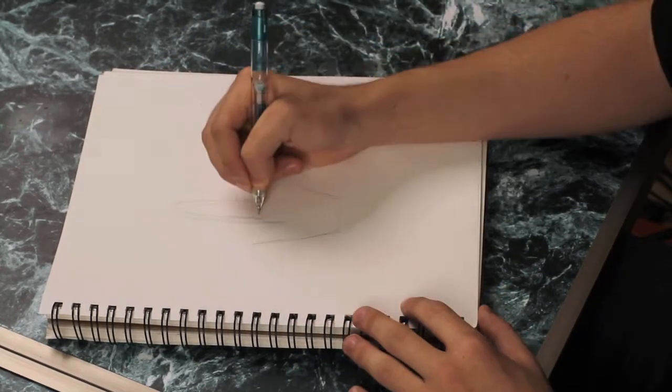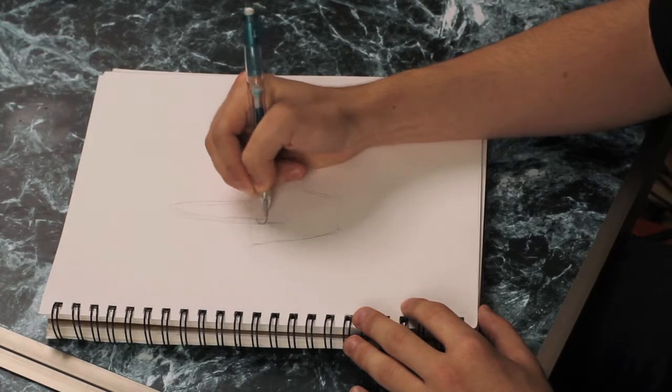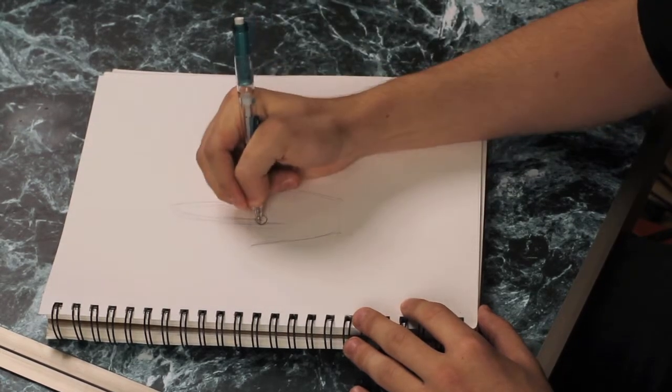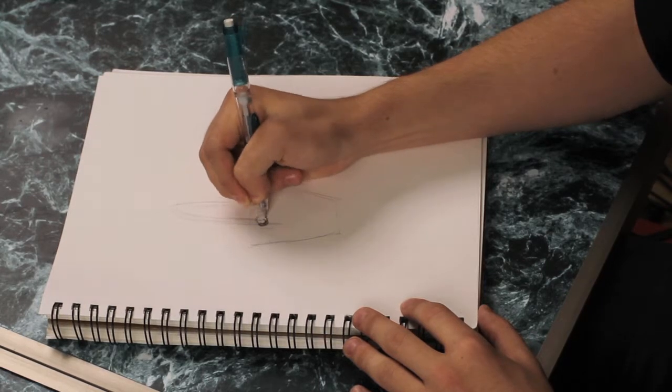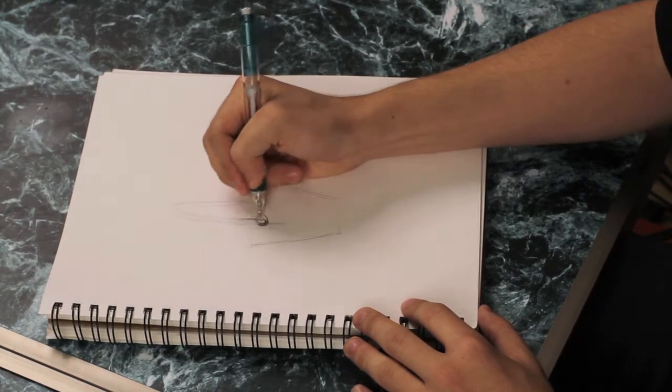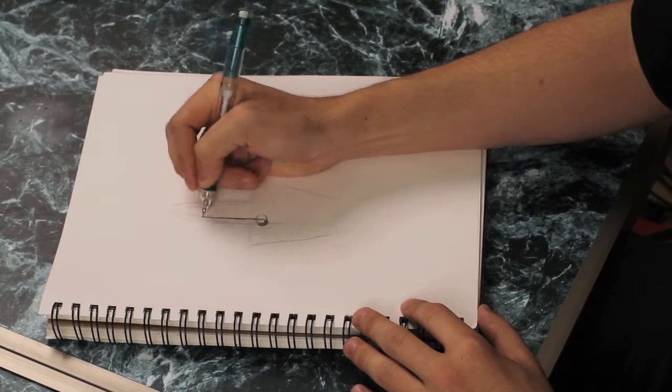So then from there we can draw where the attachment of the handle will be, just with a slight little circle. Give it a couple ridges. And then from there we can start to harden in the handle.